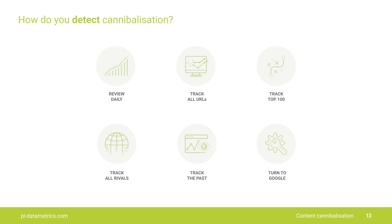So how can you detect it? First of all, you need to analyze your visibility daily. You need to set up an alert system that will tell you, for example, if one page has been replaced by another. Because it starts off steadily. And now that Google has claimed that it's stopping clustering, we are starting to see an increase in the amount of conflict.